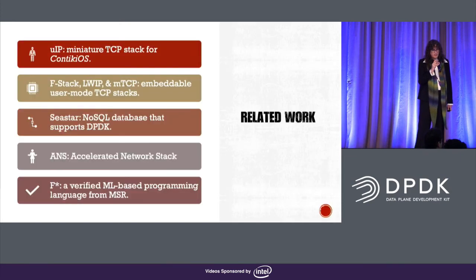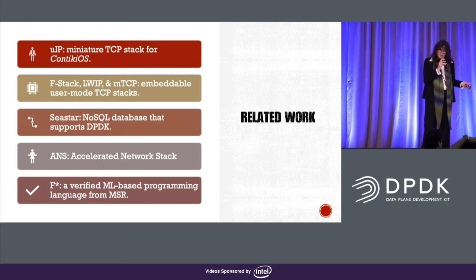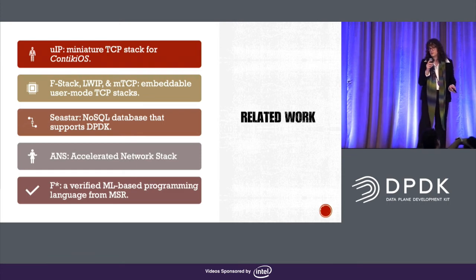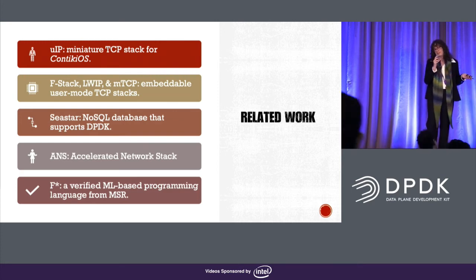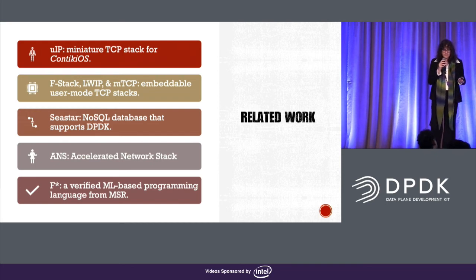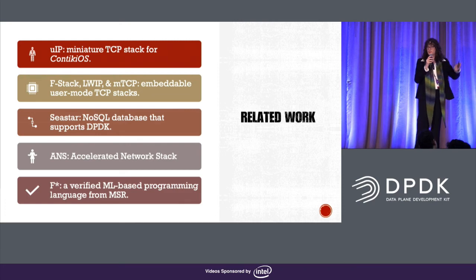There's also related work to Catnip. We've got MicroIP, which is a miniature TCP stack for Contiki — companies like Cisco contribute to it, and it's still actively developed with an IPv6 stack recently added. Then there's Fstack, LWIP, and MTCP — all embeddable TCP stacks optimized for throughput, built on top of kernel threads, which we really couldn't use because of our latency requirements. CSTAR is a NoSQL database that supports DPDK. ANS apparently stands for Accelerated Network Stack. FSTAR is a verified ML-based programming language being developed at MSR — it's an example of where we're going beyond C/C++ and Rust, intended to provide many more guarantees than just safety and concurrency.